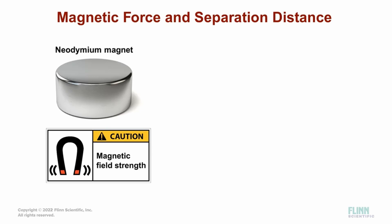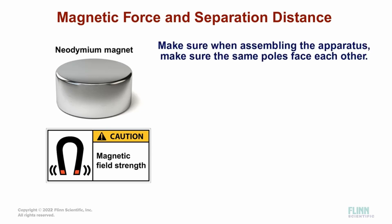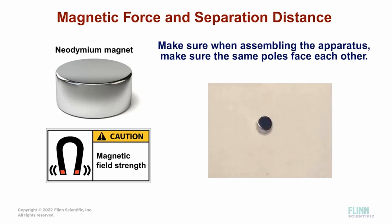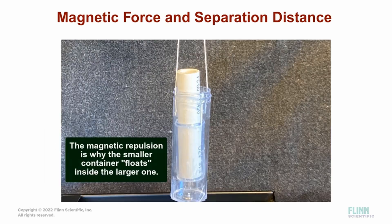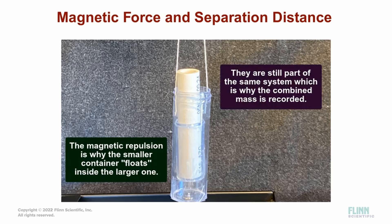The neodymium magnets have a north and south pole just like any other magnet. When putting this setup together, make sure the same poles face each other so the magnets repel each other. Be careful — the strength of these magnets means they can snap together with a lot of force if opposite poles come in contact. This repulsion is what causes the smaller container to essentially float inside the larger container. While the two containers are not touching, they are still part of the same system, which is why the combined mass is recorded. They are interacting through magnetic forces, which are non-contact forces.